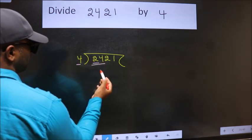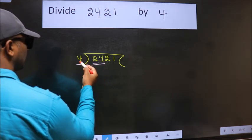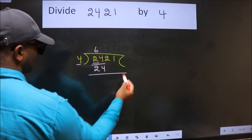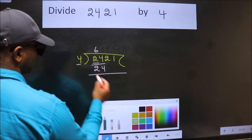When do we get 24 in the 4 table? 4 times 6 equals 24. Now we should subtract. We get zero.